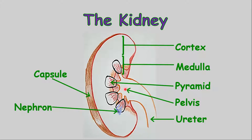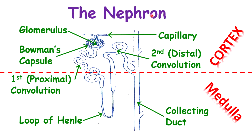Inside the medulla, you'll see something called a nephron. The nephron is in two places: part of it is in the cortex and part of it is in the medulla. Leading from the kidney, carrying urine towards the urinary bladder, is the ureter. The nephron is the filtering unit of the kidney. There are thousands of these nephrons in each kidney, and they are responsible for filtering. For examination purposes, if a question asks where the glomerulus or Bowman's capsule is located, it is in the cortex. The loop of Henle is in the medulla.